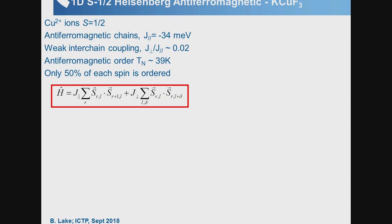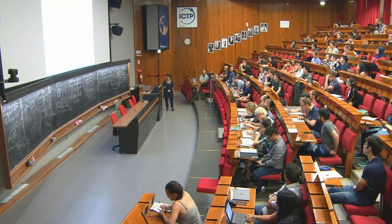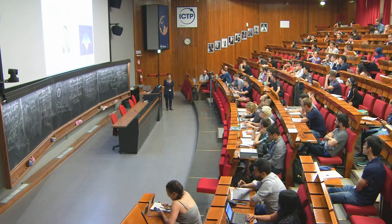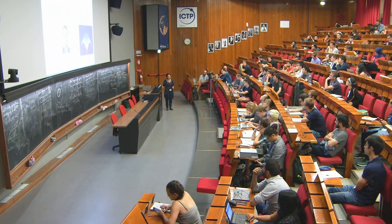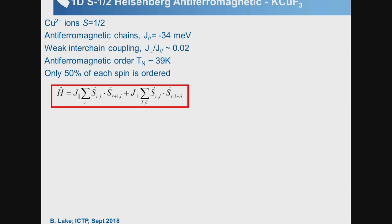The sample used was potassium copper trifluoride (KCuF₃), with Cu²⁺ spin-½ ions. The compound has strong interactions due to orbital ordering along the c-axis, forming chains along the c-axis with much weaker inter-chain interactions in the a-b plane. It has a small inter-chain coupling of a few percent, which is enough to give rise to long-range magnetic order, so the Hamiltonian includes coupling along the chain plus weak inter-chain coupling.